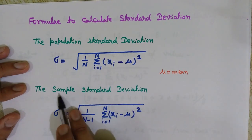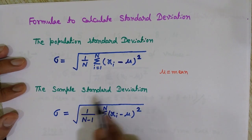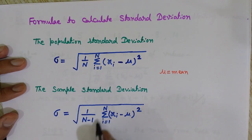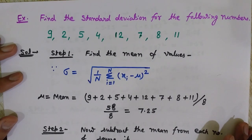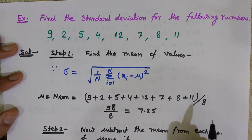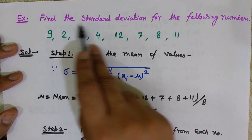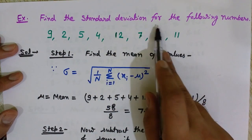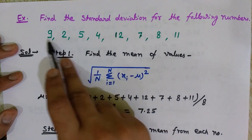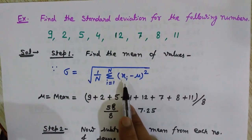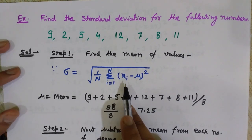If we are taking sample values from a set, we use the sample standard deviation formula. Now, to make it very clear, let me take an example. The question is: find the standard deviation for the following numbers. We are given a set of numbers and we want to find the standard deviation; we will also calculate the variance.